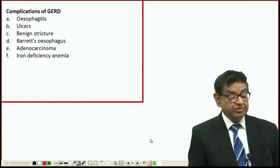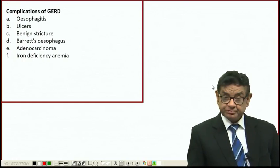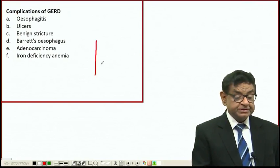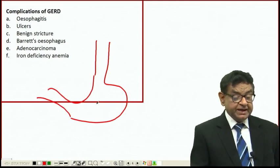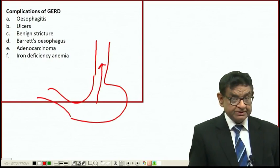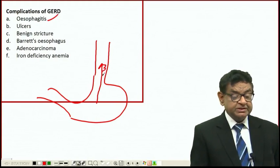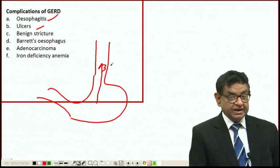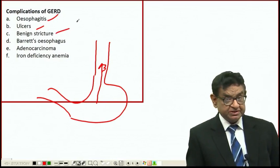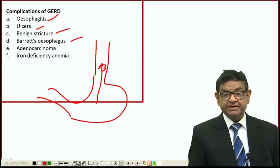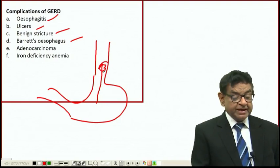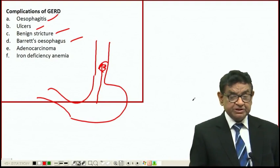Dysphagia is painful swallowing, and nocturnal asthma occurs because acid may enter the lungs. Now let's see what complications can occur. The acid goes into the lower end of the esophagus, leading to esophagitis. It can even lead to ulcer formation, and when the ulcer heals, it may lead to benign strictures. It can lead to Barrett's esophagus, which is intestinal metaplasia, and adenocarcinoma can develop.